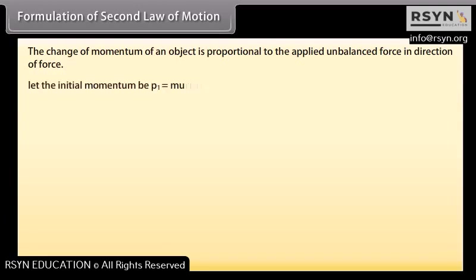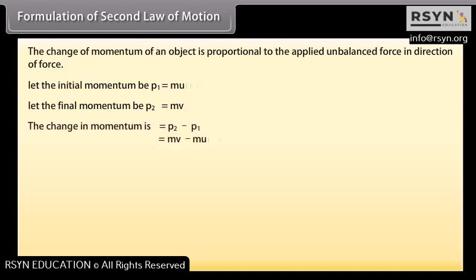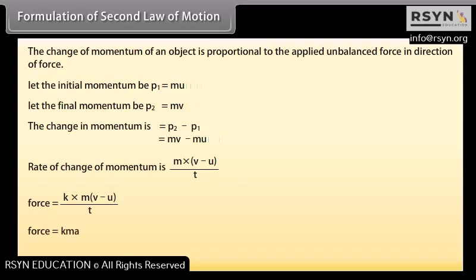Let the initial momentum be P1 = MU. Let the final momentum be P2 = MV. Rate of change of momentum is M(V - U)/T. Force = K × M(V - U)/T. Force = KMA, where K is the proportionality constant.